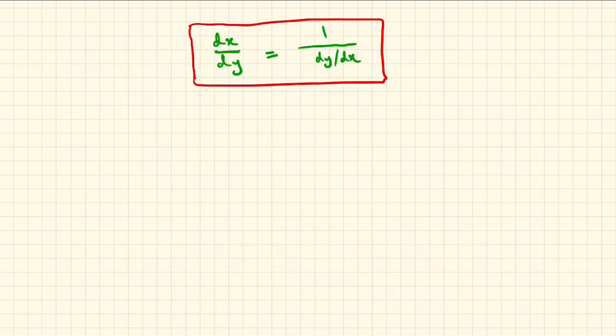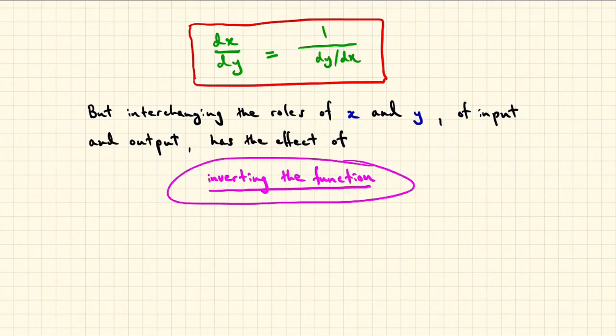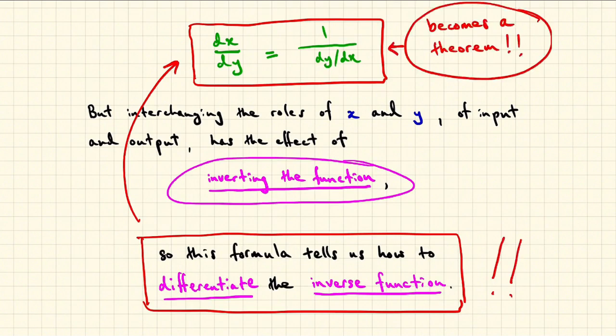This equation, dx dy equals the reciprocal of dy dx, is an irresistible deduction from the notation and intuition of Leibniz, and turns out to be a theorem about derivatives of inverse functions. Interchanging the roles of x and y, of input and output, has the effect of inverting the original function. So this formula tells us how to differentiate the inverse function. It becomes a non-trivial and useful theorem about derivatives.